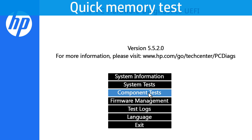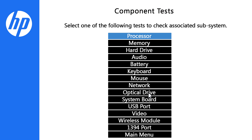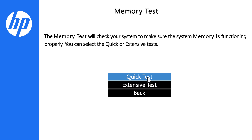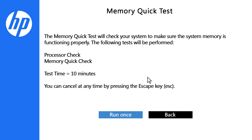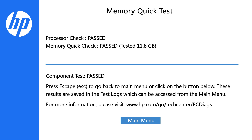Click Component Tests. Next, click Memory, then click Quick Test. Click Run once to start the test. When the test is complete, the results display on the screen.